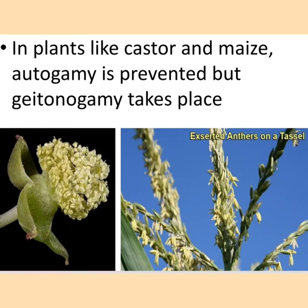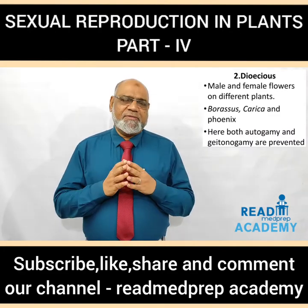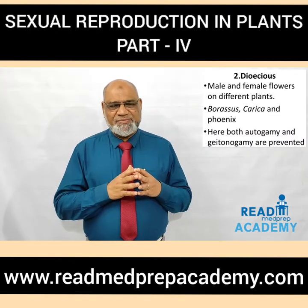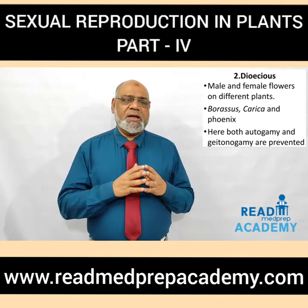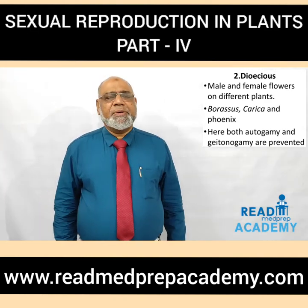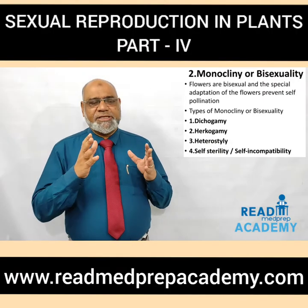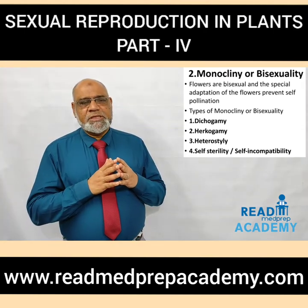On the left side you can see the castor flowers, and on the right side the exserted anthers on a tassel. What are dioecious flowers? Male and female flowers are on different plants — examples: Borrassus, Carica, and Phoenix. Here both autogamy and geitonogamy are prevented. You can see in Carica papaya the male flowers on the left side showing the stamens, and the female flowers on the right side showing the branched stigma.